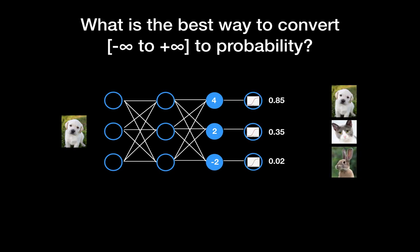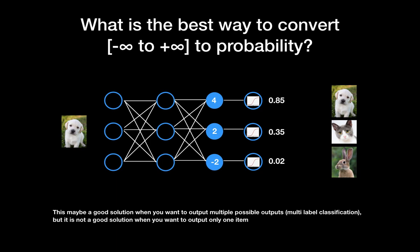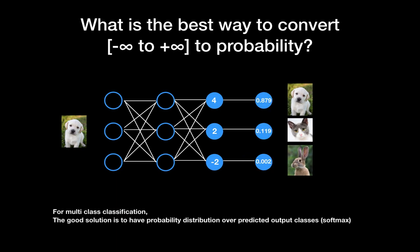If you're familiar with binary classification, you might know the sigmoid function. We can apply sigmoid as the activation function of the last layer to get probabilities — for example, 85% for the dog, which is the greatest probability. This may be a good solution when you want multiple possible outputs, such as in multi-label classification, but it is not a good solution when you want to output only one class for multi-class classification.